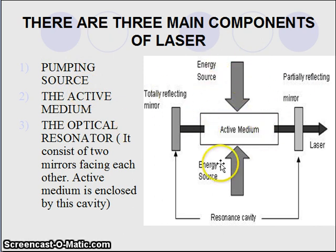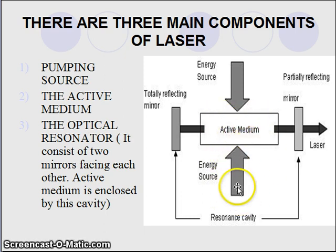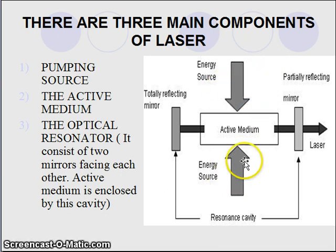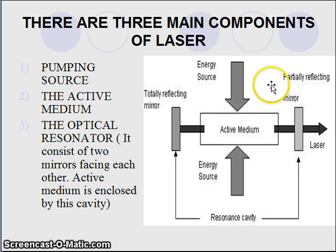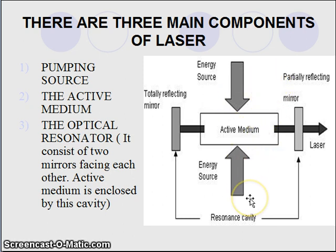The pumping source is the energy source which is used to excite the medium in a laser. The pumping source in case of ruby laser is an optical flash lamp, whereas the pumping source in case of helium-neon laser is anode and cathode, or electric discharge pumping. There are different pumping sources in different lasers.